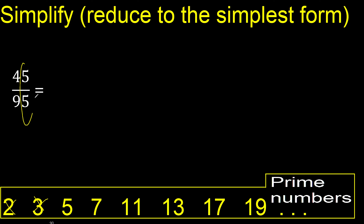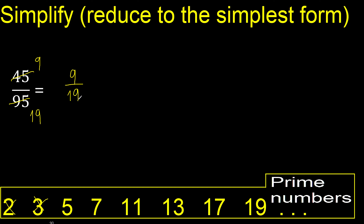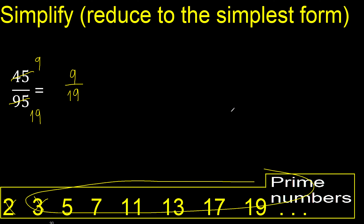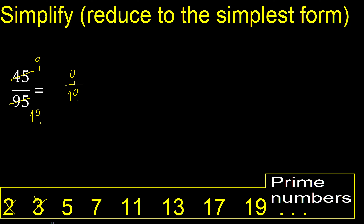Yes, because the last digit is 0 or 5 — here it is 5. 45 divided by 5 is 9, and 95 divided by 5 is 19. We finish here because the results cannot be divided by the same number.